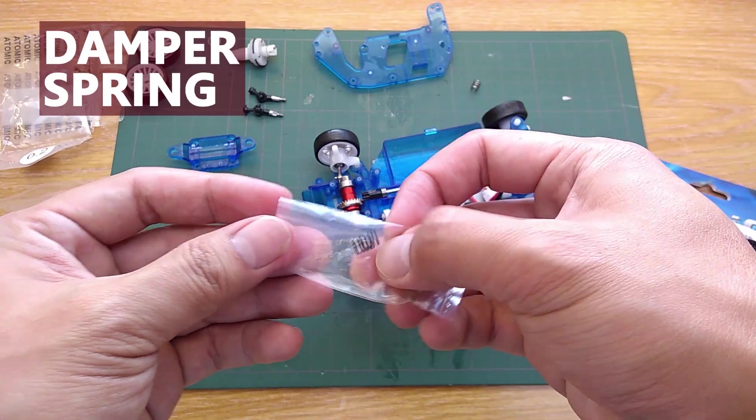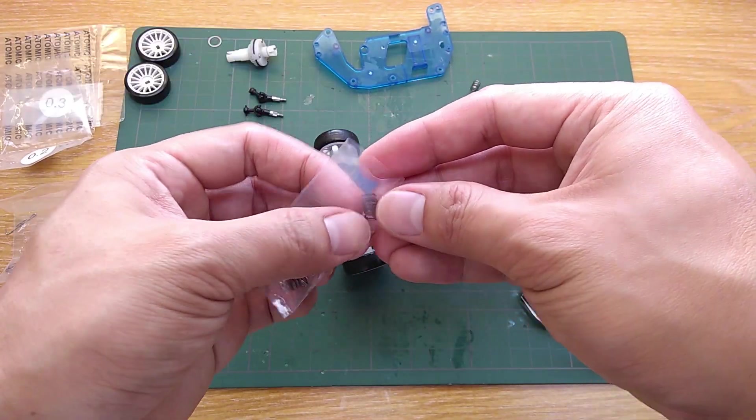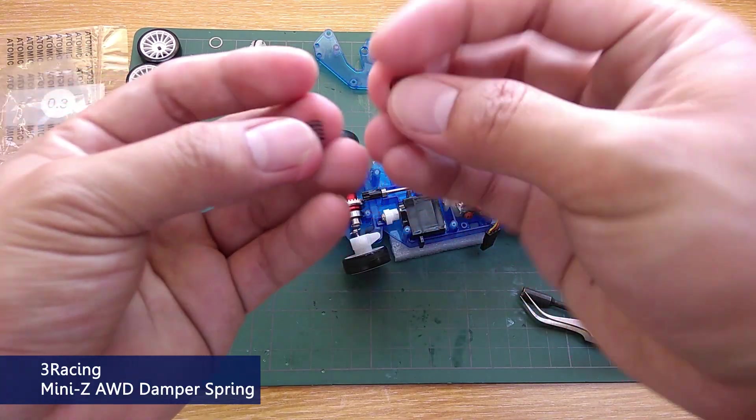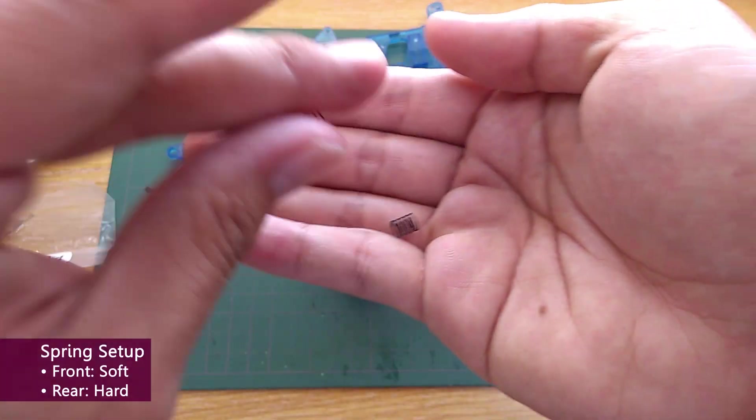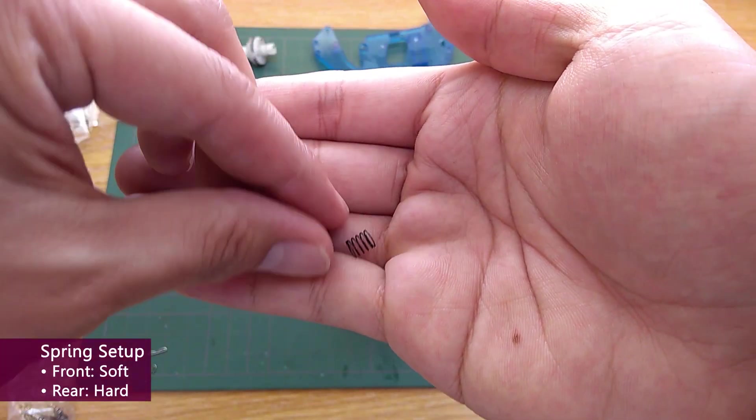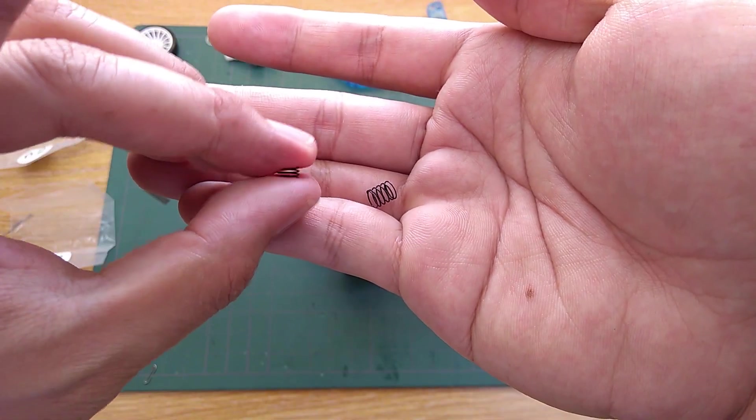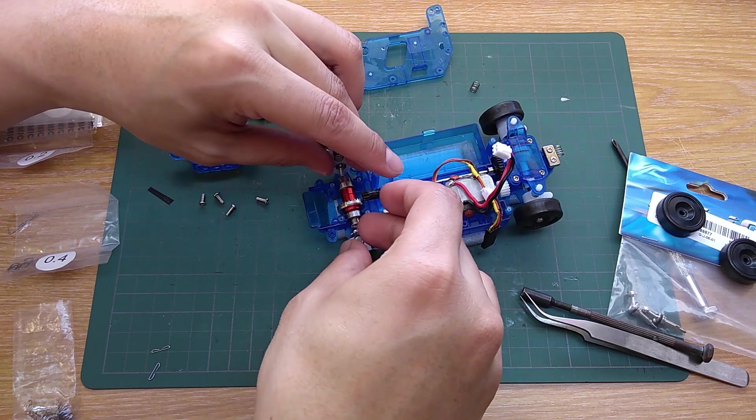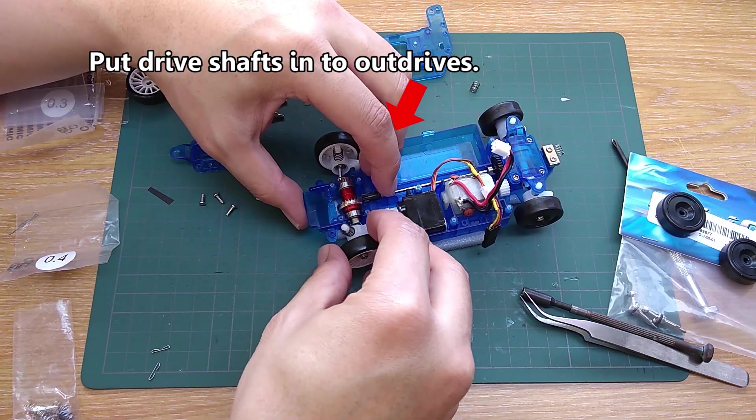Before putting the gearbox back together let's tune the car by changing the springs. Here are the springs from 3 Racing for Mini-Z all-wheel drive. I'm gonna use soft springs at the front and hard springs at the back, so the car has tendency to oversteer making it easier to drift. Now I can close the front gearbox.